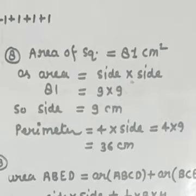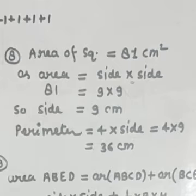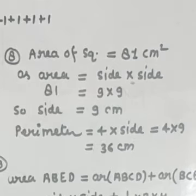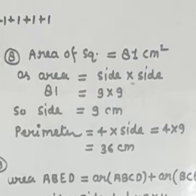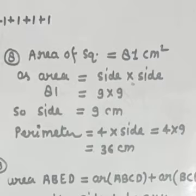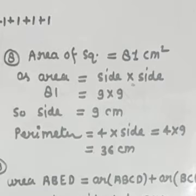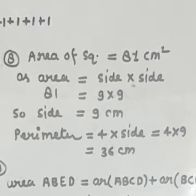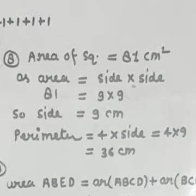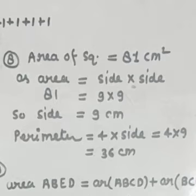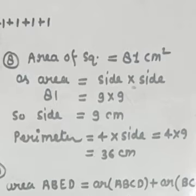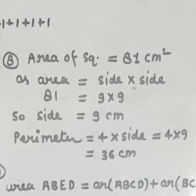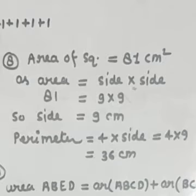Question number 8: the area of a square is 81 cm². Using area = side × side: 81 = 9 × 9, so the side is 9 cm. Now finding the perimeter: 4 × side = 4 × 9 = 36 cm. That is the correct answer.